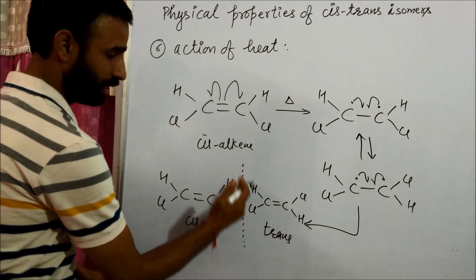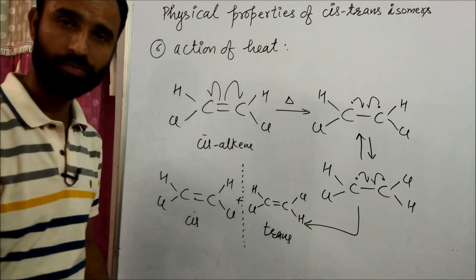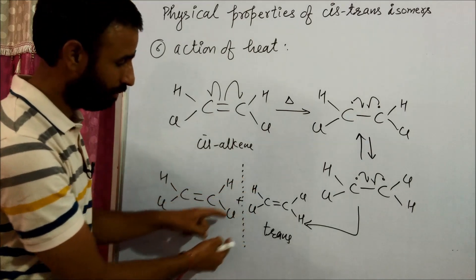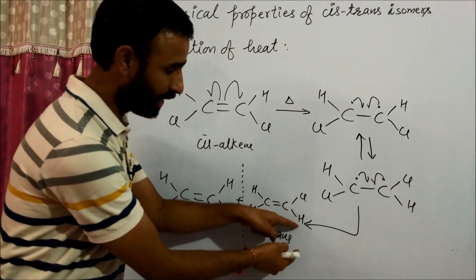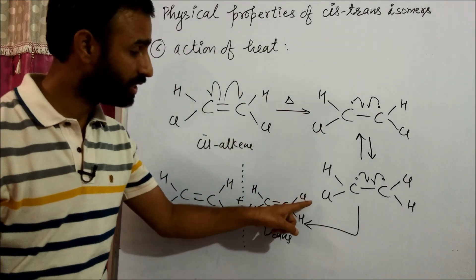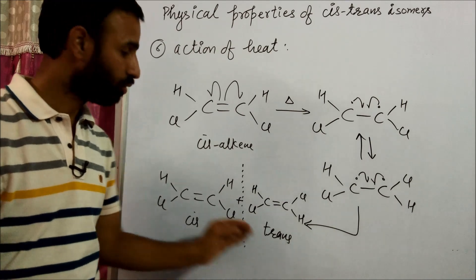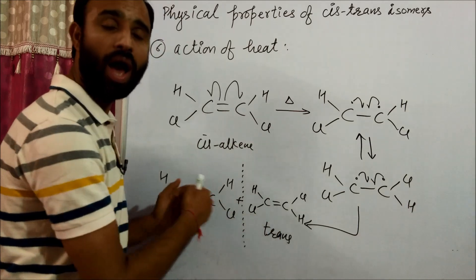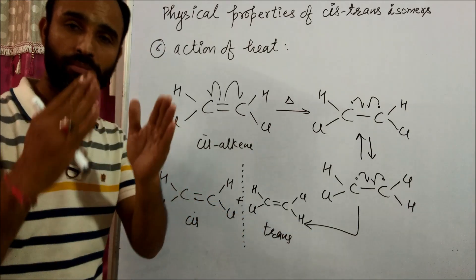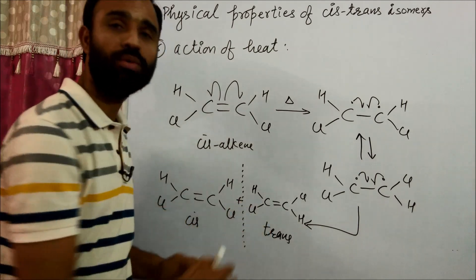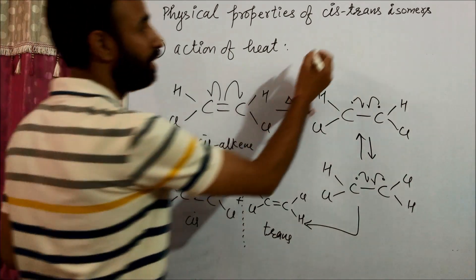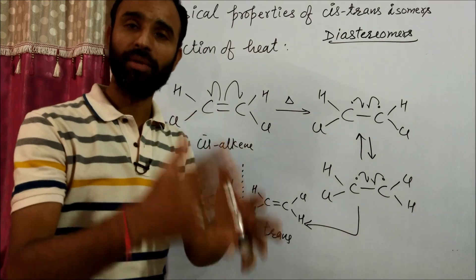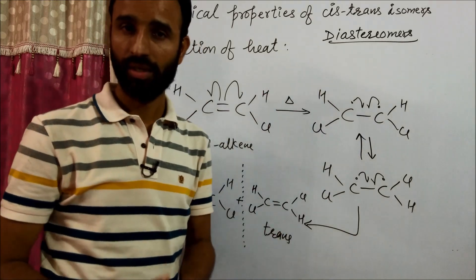One more thing — if we place a mirror between cis and trans isomers, are they mirror images? No. Because in the mirror image, H and Cl would be from the same positions, but on the other side they appear as Cl and H — so there is no mirror image relation. These are geometrical isomers. Cis and trans isomers have no mirror image relation, and such isomers are known as diastereomers.